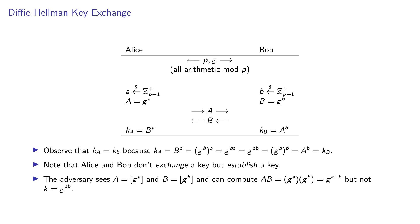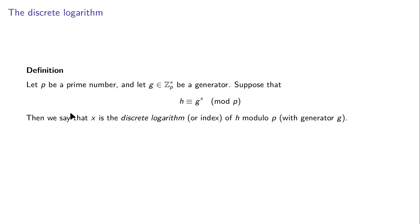Now you can wonder, suppose that the adversary is capable of computing lowercase a given A. This is exactly the discrete logarithm problem. Let p be a prime number and g be a generator. Suppose that h equals g to the power x modulo p. Then we say that x is the discrete logarithm of h modulo p with generator g. We should be careful in the sense that this value is determined by the prime number and also by the generator g. But otherwise it makes sense to call it a logarithm, because this is exactly what logarithms are also over the real numbers.